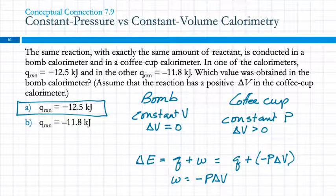Now, is it a huge difference there? 12.5 to 11.8? It's not a really big difference, but it is a difference. So, what we measure in the coffee cup calorimeter will typically be smaller than what you would measure in a bomb calorimeter, but most of the time, the difference isn't really important.